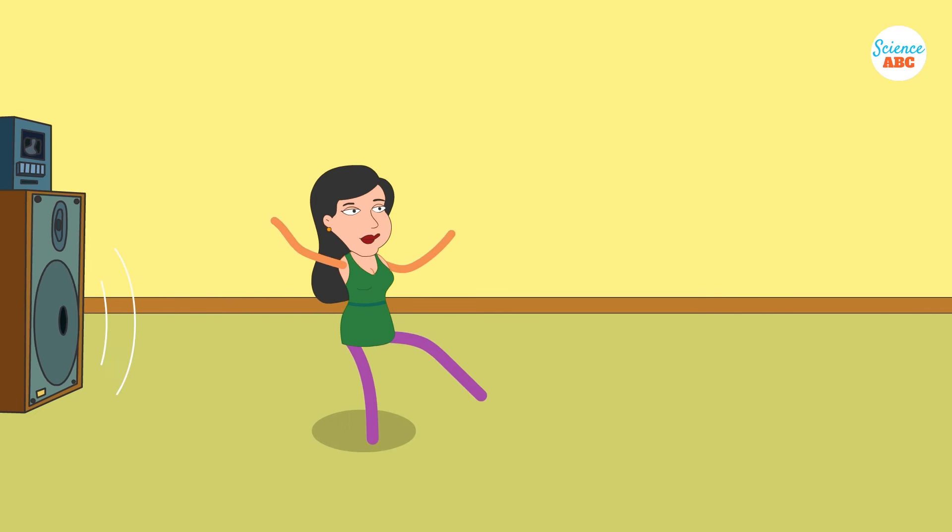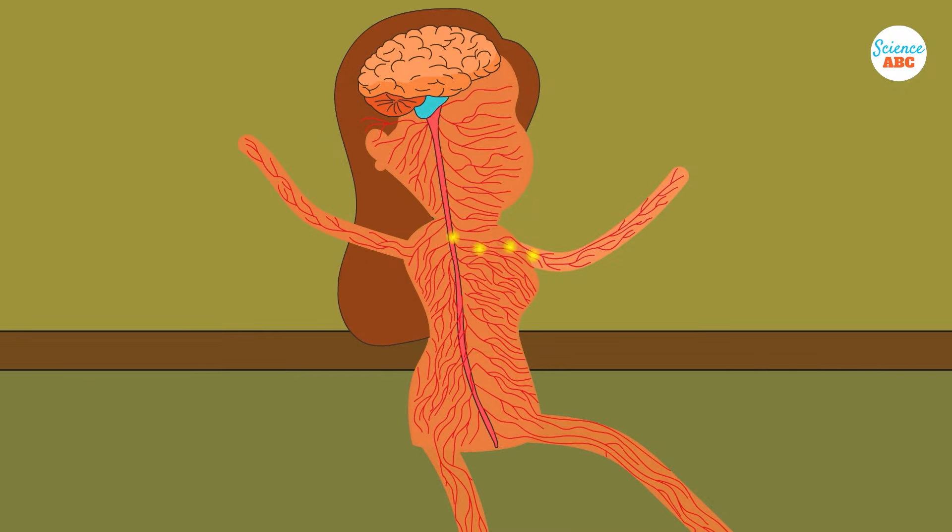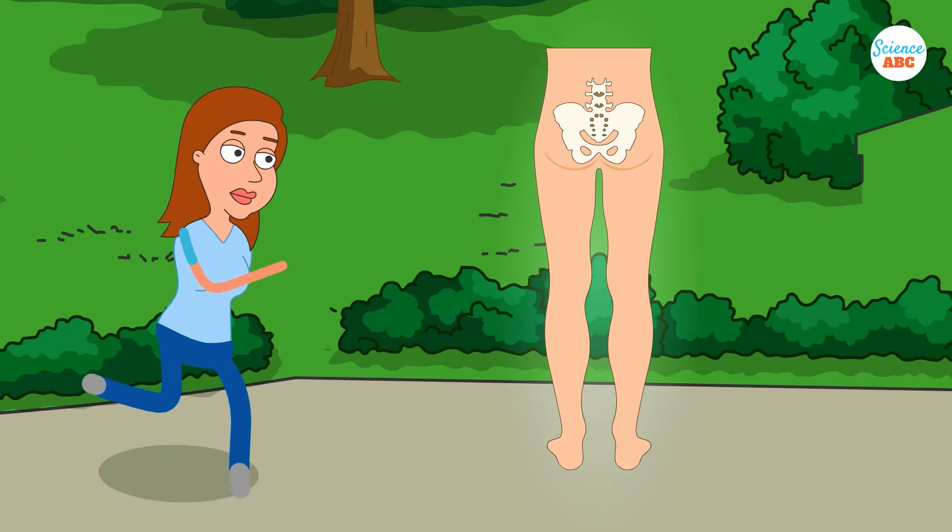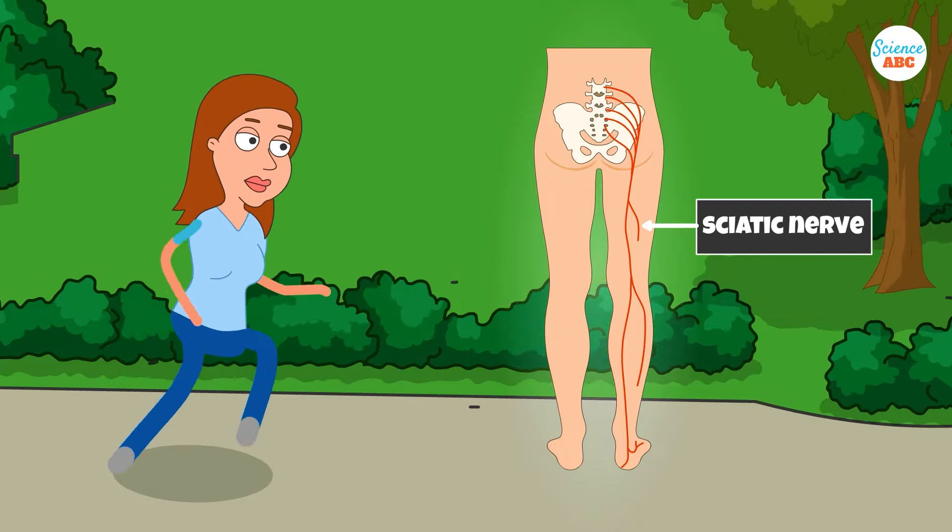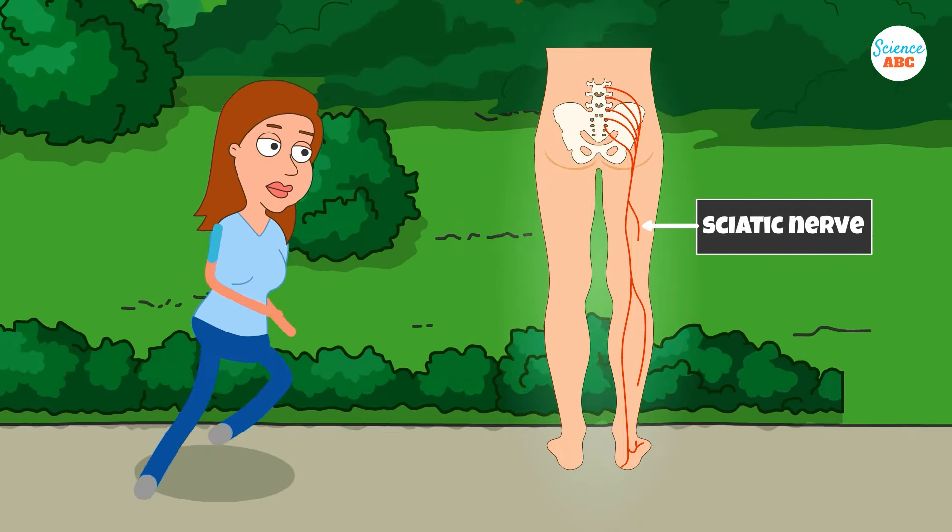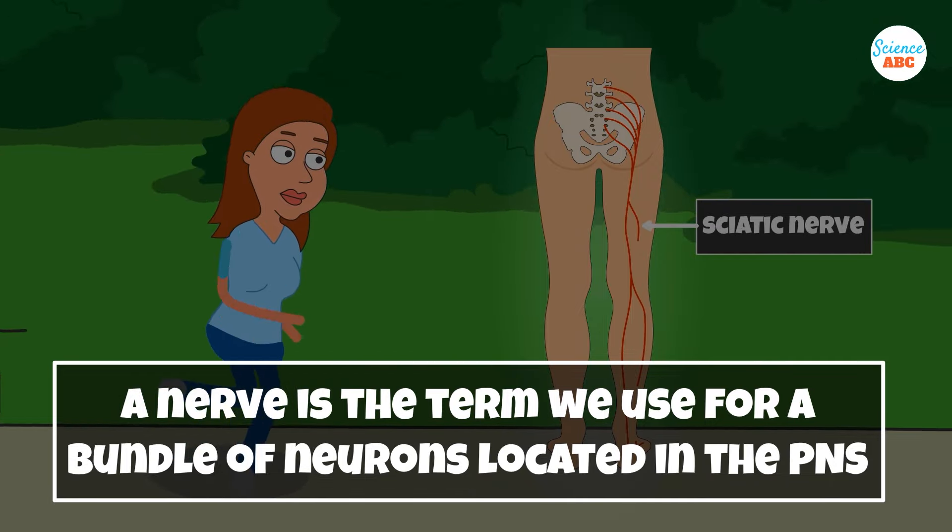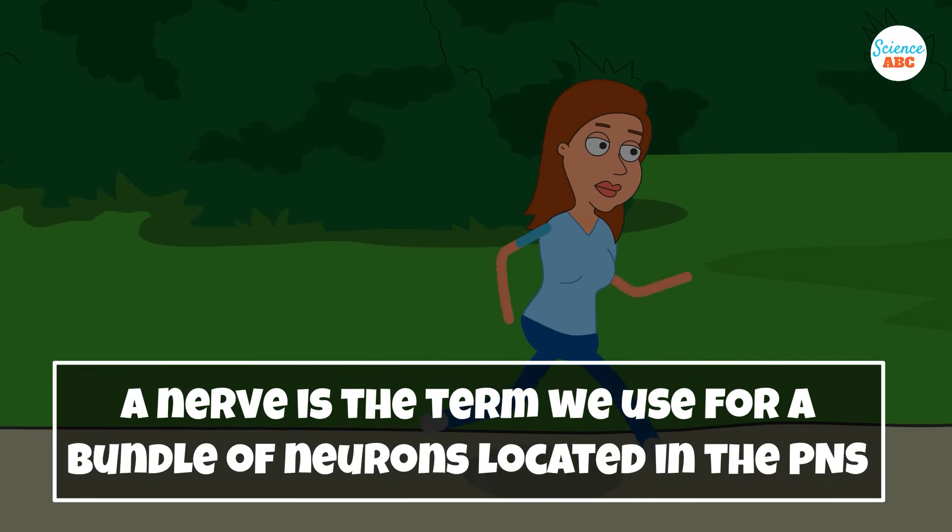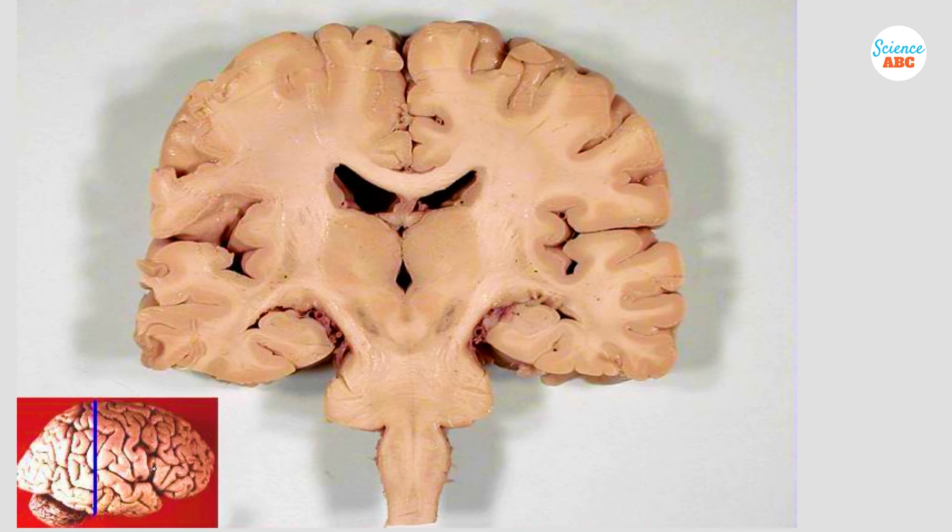Neurons often transmit signals over extremely long distances. In fact, the sciatic nerve is the longest nerve in the body, running from the lower back to the heel of the foot. A nerve is the term we use for a bundle of neurons located in the PNS. If you slice and look into the brain, you will see a lighter region and a darker region.